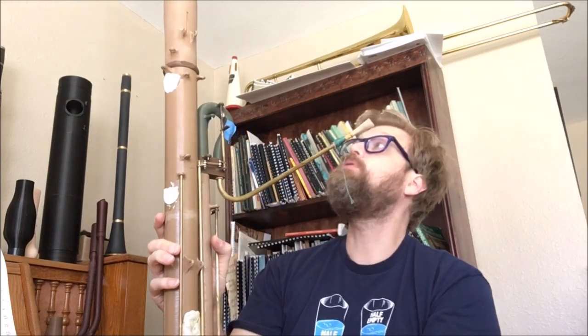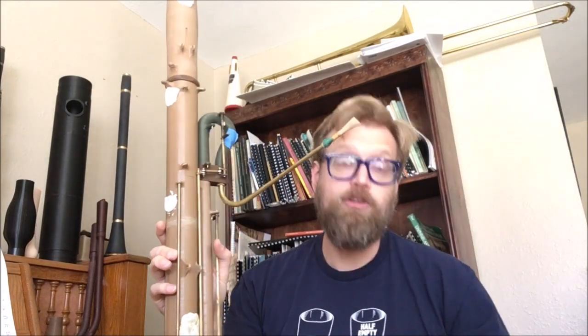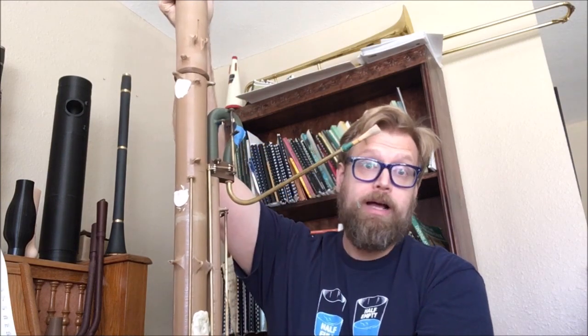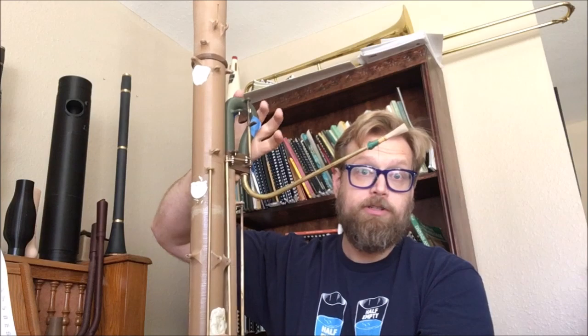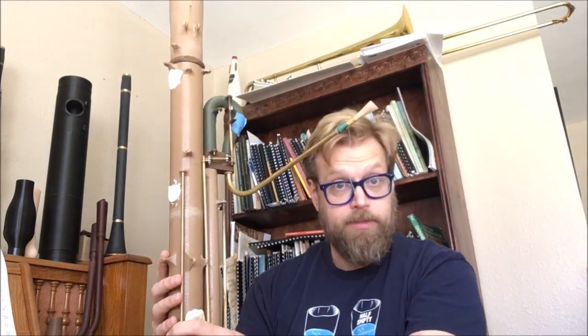What you see here is still very much prototype. Of the what amount to seven different joints on the instrument, only three of them on here are actually the final version. The bell, the shepherd's crook right here, and the lower wing joint right here. Everything else is still being developed. The bass joint and the upper wing are actually done. I just don't have the final versions of them ready to go yet.